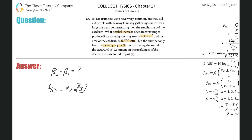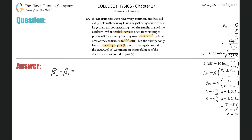To find the decibel increase, we're looking for beta 2 minus beta 1. I know these have formulas dealing with sound intensity level, also known as decibel level: it's 10 times the log of the intensity of the sound divided by the threshold of hearing. Let's write that out for each beta.